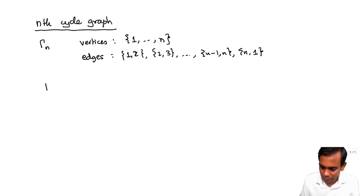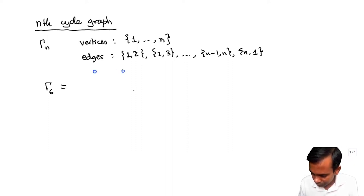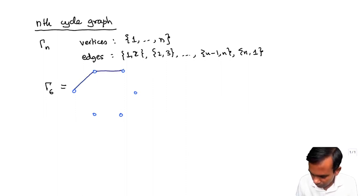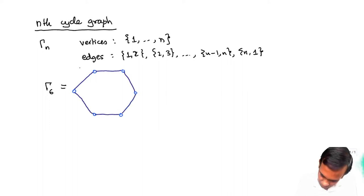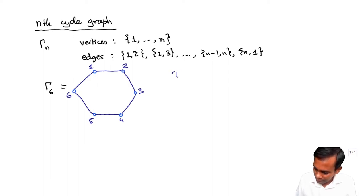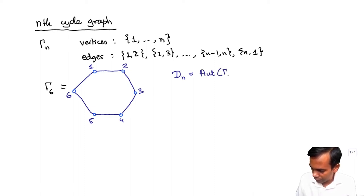Let me draw an example. Γ6 is going to have 6 vertices and 6 edges joined. I'll call these vertices 1, 2, 3, 4, 5, 6. Now, what's the order of the group Dn? I'm defining Dn to be the automorphism group of the graph Γn. This is called the nth dihedral group.